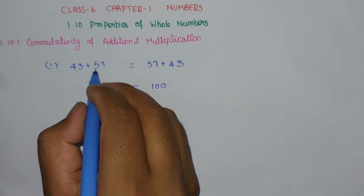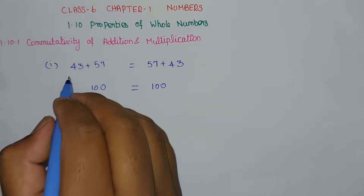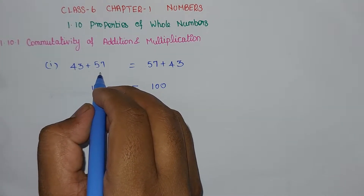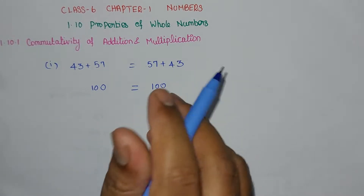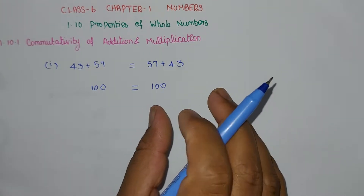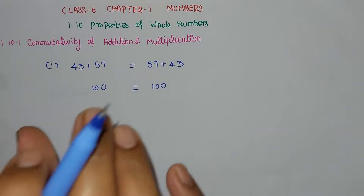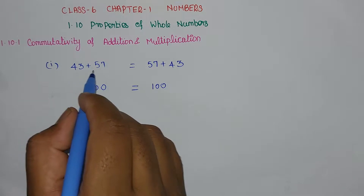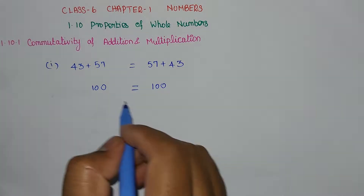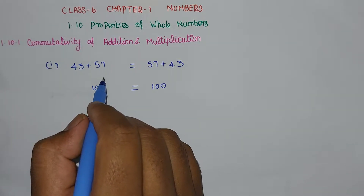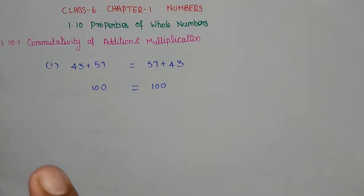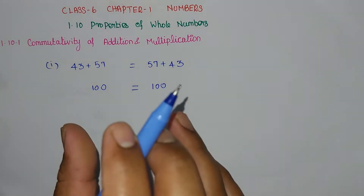When we add numbers, if we change the order, the value remains the same. 43 plus 57 gives 100, and 57 plus 43 also gives 100. The order changes but the addition value stays the same. This is commutativity of addition.